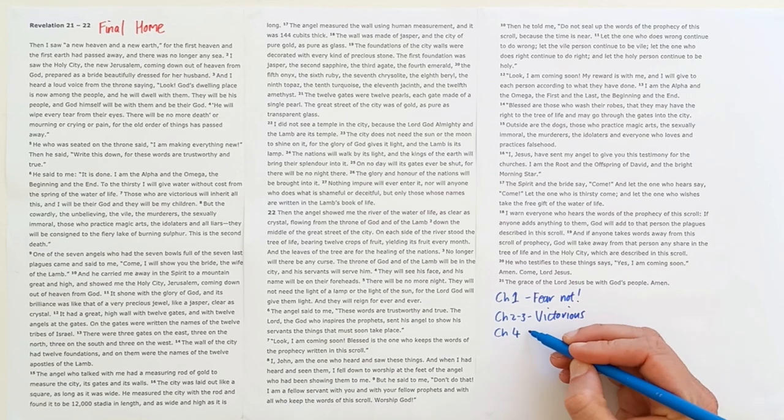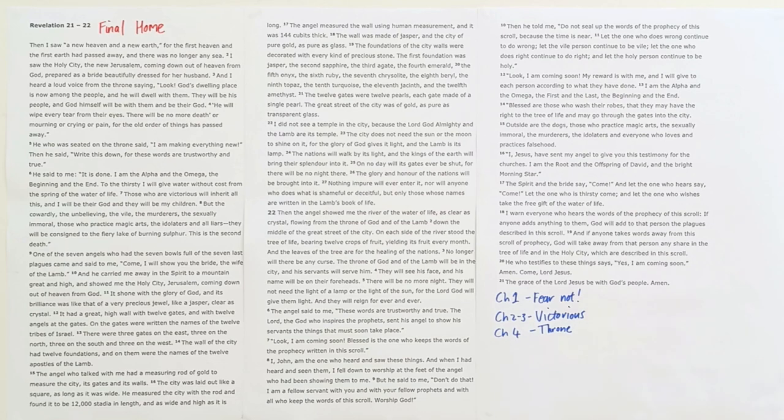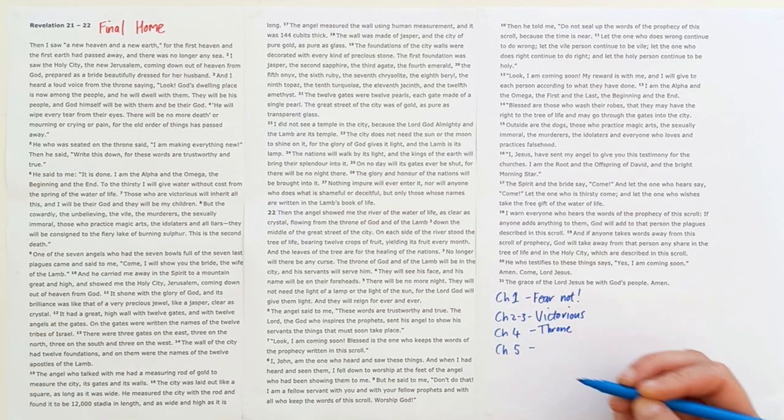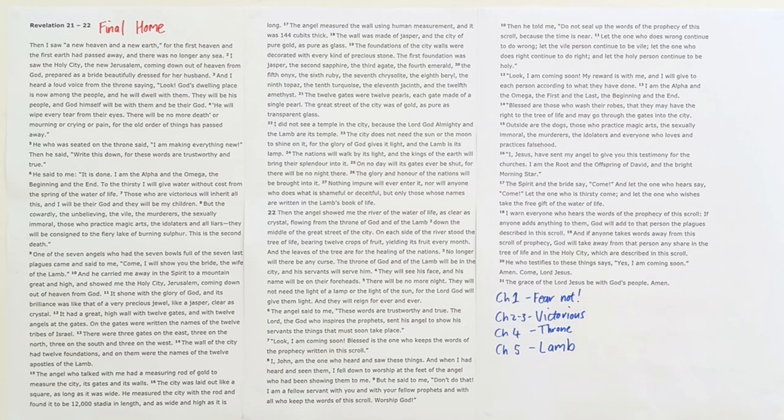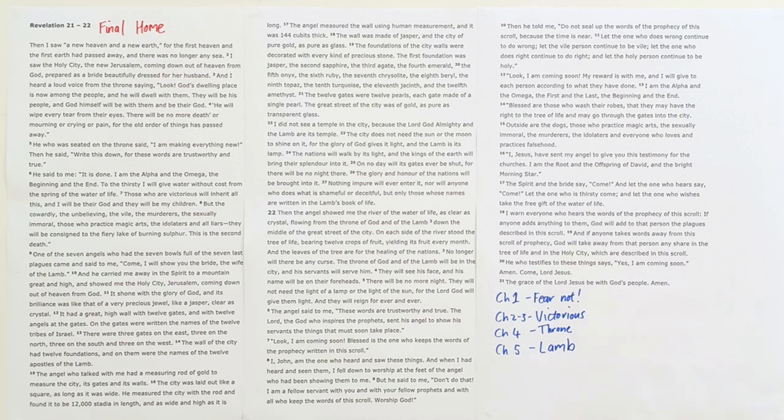In chapter four we were taken into the throne room of heaven where we saw the Lord God Almighty seated on his throne completely in control. In chapter five we were shown the Lamb. The Lamb really is the central figure in this whole letter, the same Jesus who said to his church fear not.